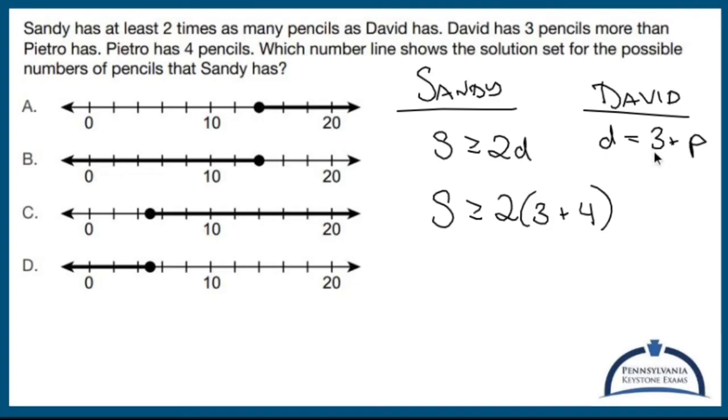So Sandy is two times David and David is three plus Pietro and Pietro is four. So three plus four is seven and two times seven is greater than or equal to 14.